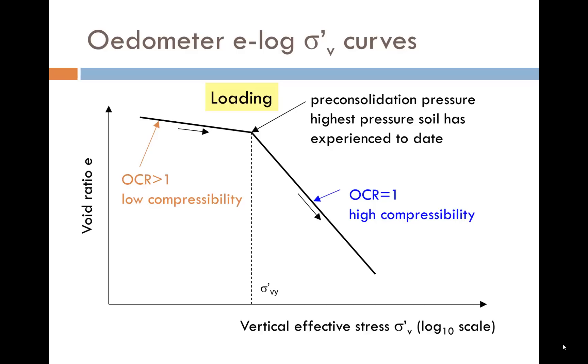This is the plot of void ratio against vertical effective stress on a log scale mentioned in the previous section. The graph is what might be obtained in an oedometer test when a sample is subjected to a number of load increments. The kink in the graph is the pre-consolidation pressure, σ'vy, the maximum ever vertical effective stress that the soil has experienced.